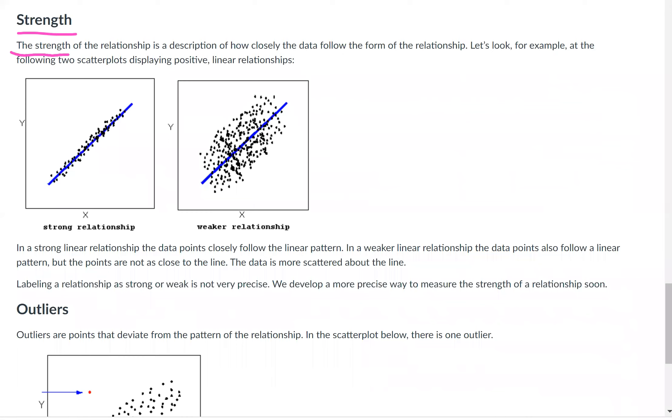Now, strength. The strength of the relationship is a description of how closely the data follow the form of the relationship. Let's look, for example, at the two following scatter plots displaying positive linear relationships. So the first one on the left has a strong relationship because the points or the ordered pairs are very close to the line that we're thinking best fits the data. The one on the right has a weaker relationship or doesn't, it's not as strong, because a lot of the points seem like they're close to the line, but the majority of them are fairly far away.